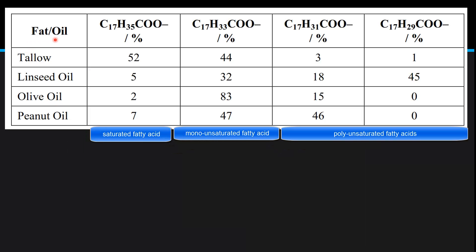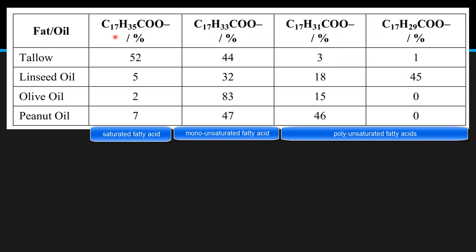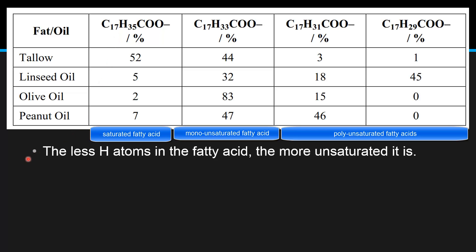Next we look at some examples of fats and oils and determine if they're mostly composed of saturated fatty acids, monounsaturated fatty acids, or polyunsaturated fatty acids. By looking at these chemical formulas we can determine the degree of unsaturation — the fewer hydrogen atoms in the fatty acid, the more unsaturated it is, meaning it contains more carbon to carbon double bonds. This first example is a saturated fatty acid composed of carbon to carbon single bonds. The next example contains one carbon to carbon double bond, so it's monounsaturated. The last two examples contain fewer hydrogen atoms, so they contain more carbon to carbon double bonds and are polyunsaturated fatty acids.